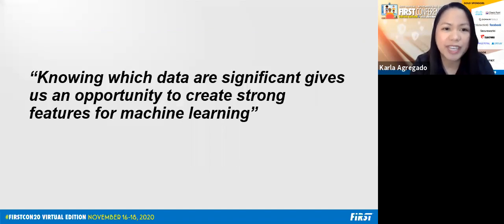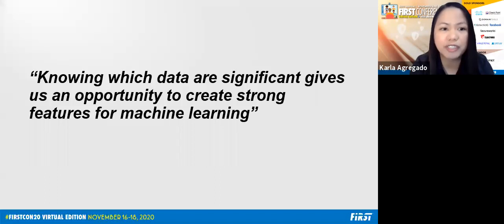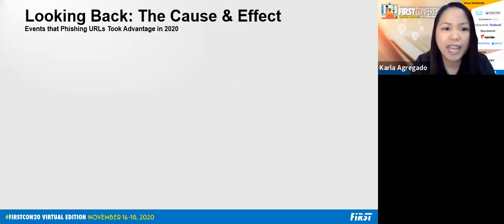In this day and age, we can easily get different data from different sources, and most of the time we tend to have millions of data every day. In the field of data science, knowing which data are significant gives us an opportunity to create strong features for machine learning. It is very important to have a keen observation whenever we see patterns or unusual behavior, especially when dealing with phishing URLs. Let's take a quick trip down memory lane of what happened in the previous months and how phishing took advantage of different events this year.